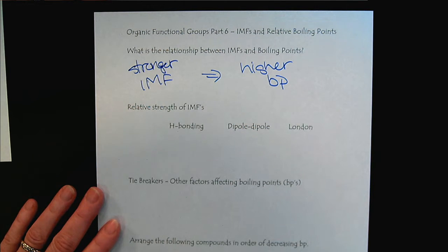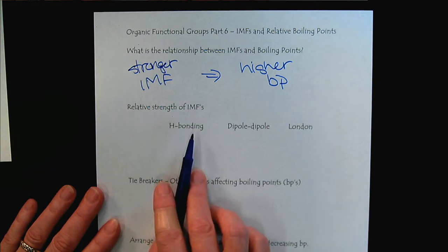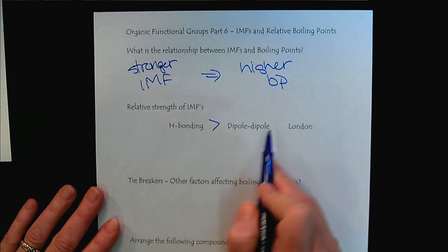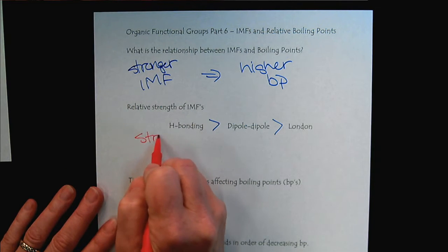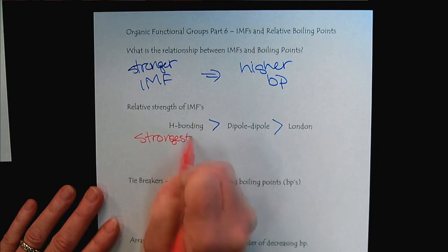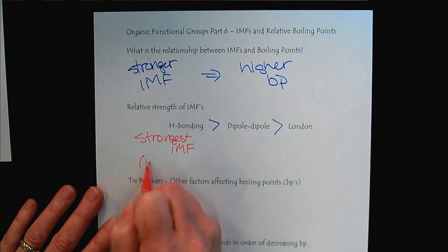But we'll go off what we already know. So we know that H-bonding is stronger than dipole-dipole, which is stronger than London. So with H-bonding being the strongest IMF, we recognize that those solutions would have the higher boiling point.